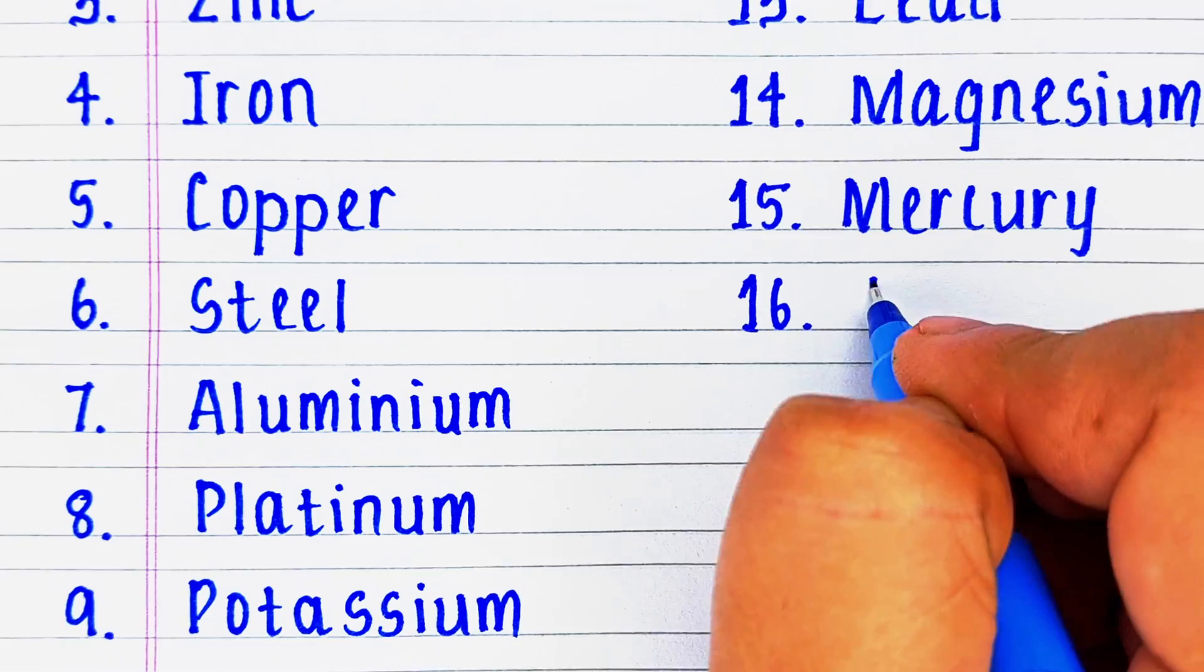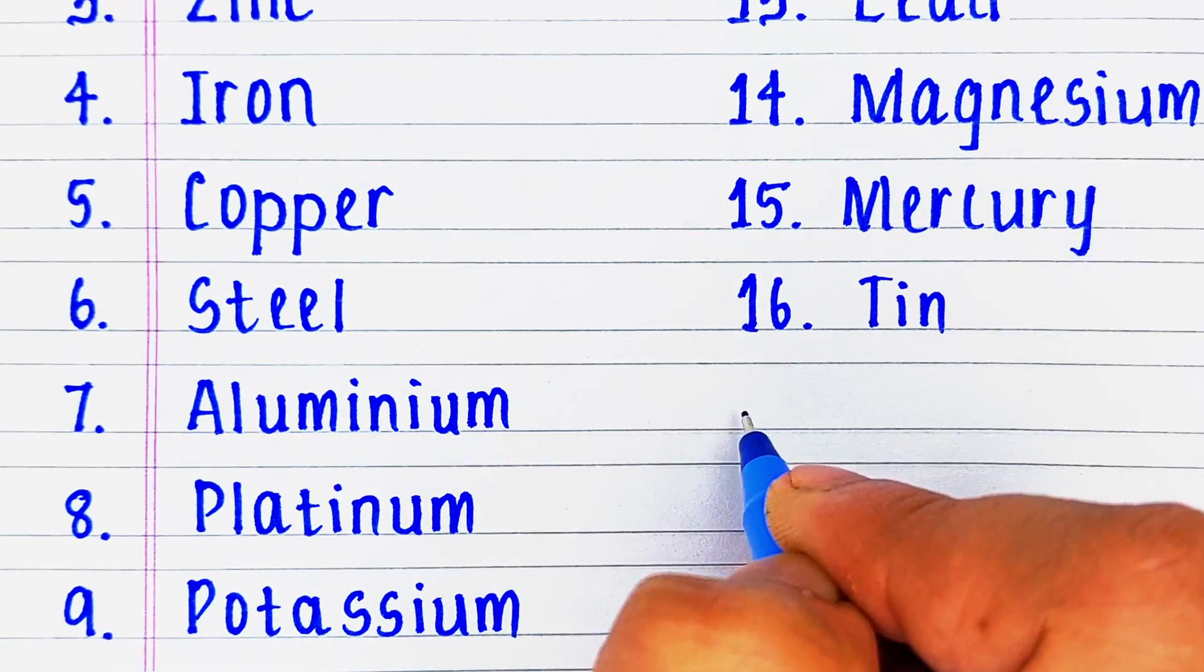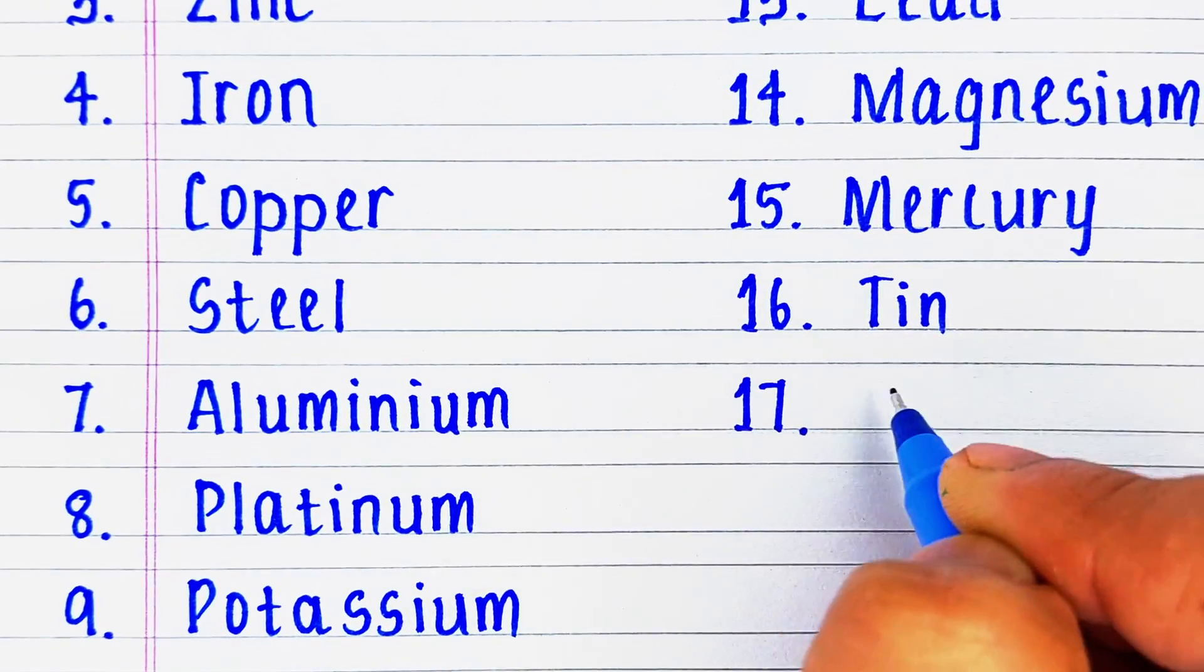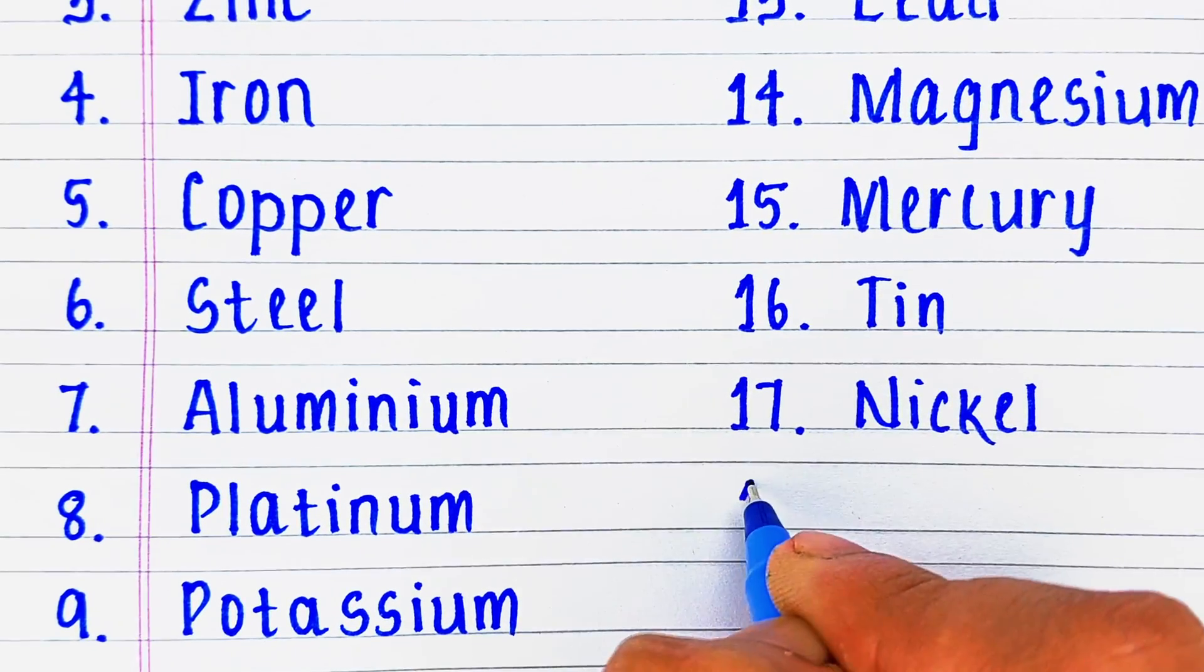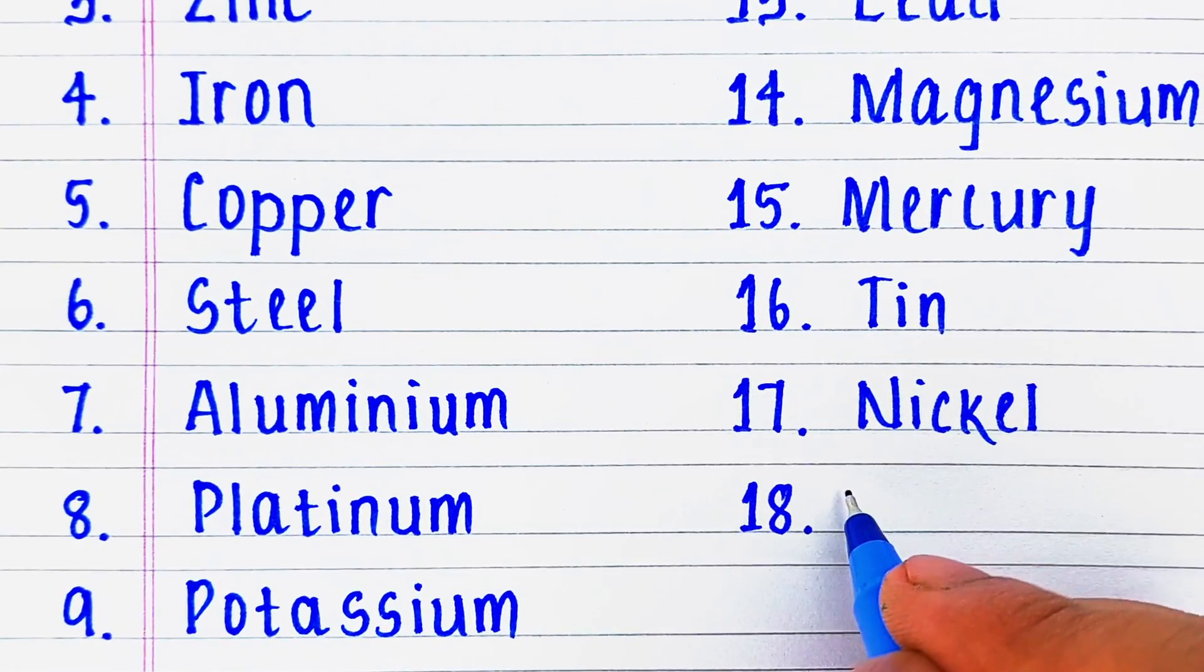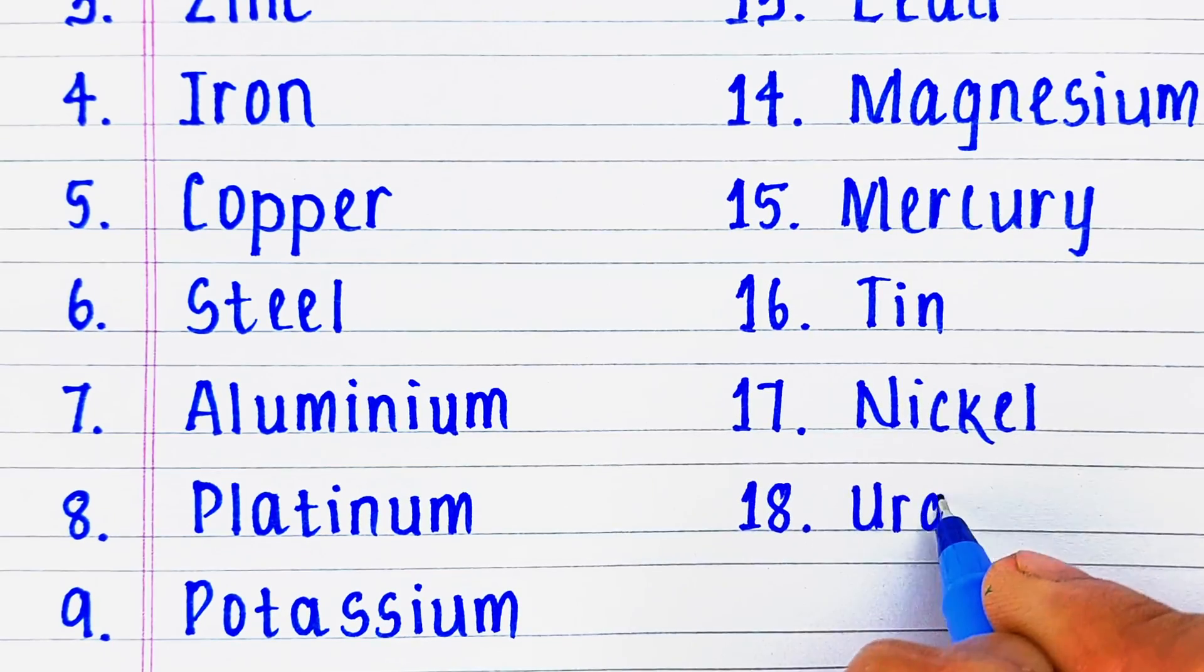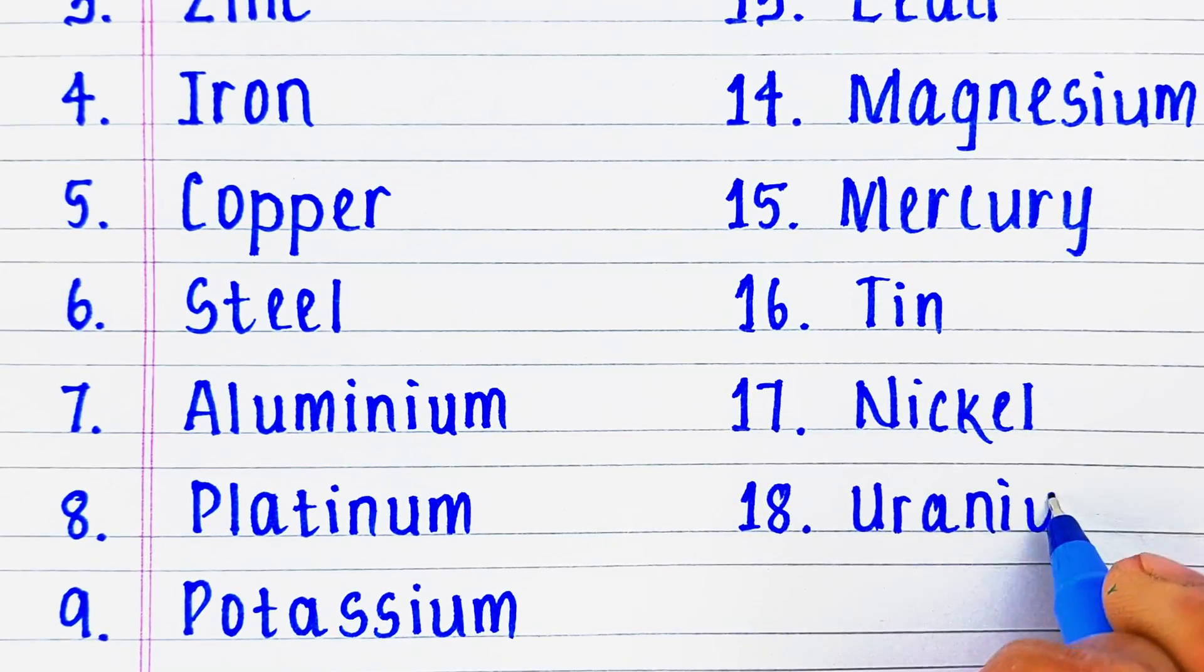Next metal is T-I-N, tin. Next one is N-I-C-K-E-L, nickel. Next metal in our list is U-R-A-N-I-U-M, uranium.